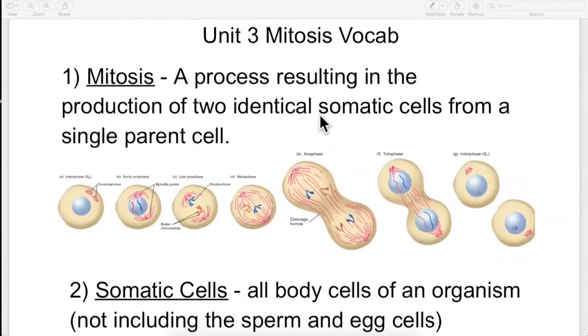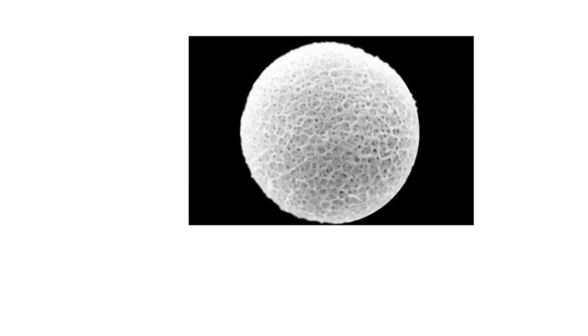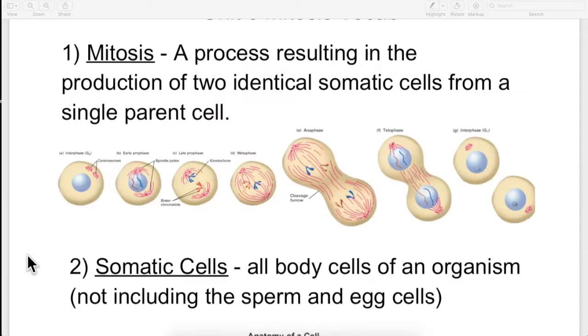So what does somatic mean? The process resulting in the production of two identical somatic cells. Well, that is your second word here. All body cells of an organism, not including sperm or eggs. So you probably have gotten through health class by now, or at least have learned where babies come from. When a sperm fertilizes an egg, it becomes a baby. That's typically how biology works. Sperm and egg cells are very special cells.